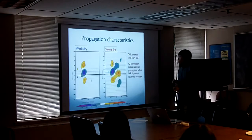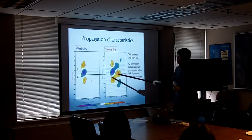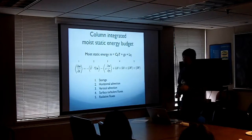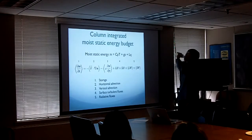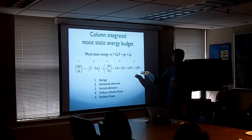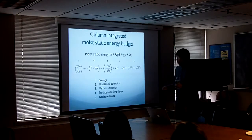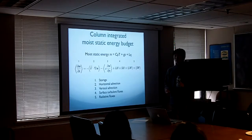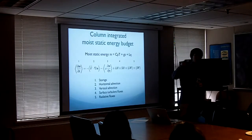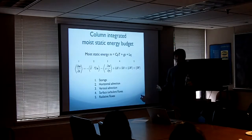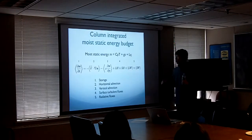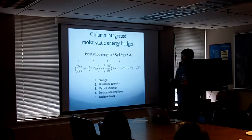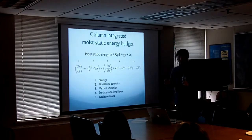To understand why one case makes propagation and the other doesn't, we looked at the column integral of Moist Static Energy budget, where Moist Static Energy is defined by a standard equation. One reason we look at MSE budget instead of moisture budget is that in the moisture budget, the dominant balance is predetermined — vertical advection and precipitation are always cancelling and dominating, making it hard to know what is causing what. In the MSE budget, terms are smaller and not necessarily dominating, so it's better for this budget study.